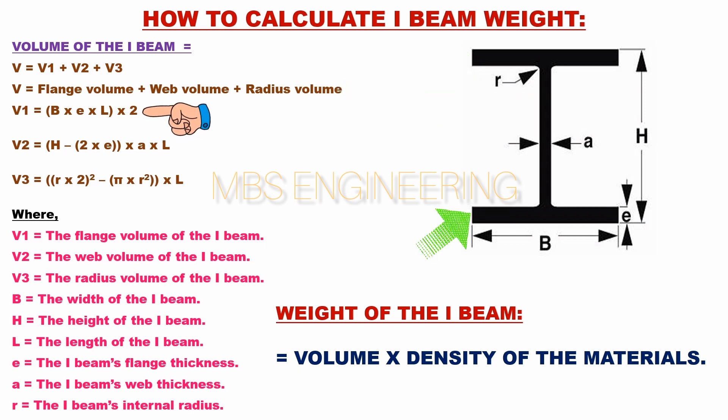V1 is the flange volume of the beam. The formula for V1 equals B multiplied by A multiplied by L, multiplied by 2.